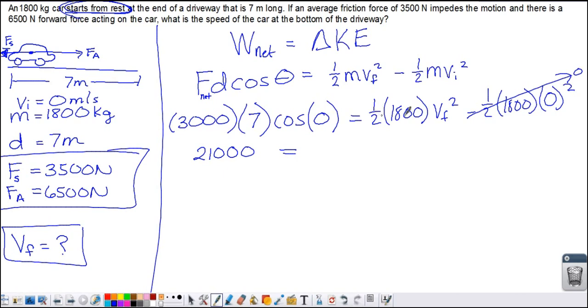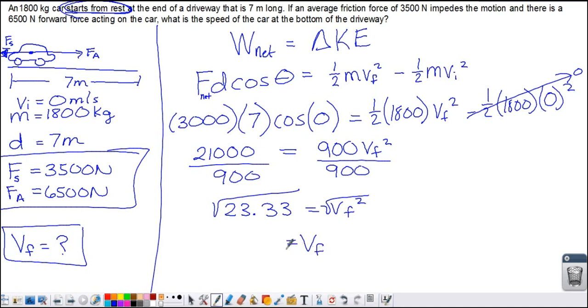Then we can go ahead and simplify. Half of 1,800 is 900 times the final velocity squared. Now we need to divide both sides by 900. And we will get 23.33 equal to the final velocity squared. We need to take the square root of each side, and we are going to end up with 4.83 meters per second. I keep saying velocity because I see the letter V there, but we're actually looking at a speed here because we're not worried about the direction. So 4.83 meters per second is the final speed of the car.